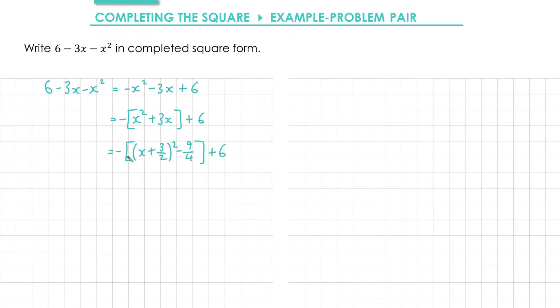Next we expand out the square brackets by multiplying by negative 1. That gives me minus x plus 3 over 2 all squared. Then we're doing negative 1 times negative 9 over 4 gives me positive 9 over 4. We can rewrite 6 as a fraction out of 4, that would be 24 over 4.